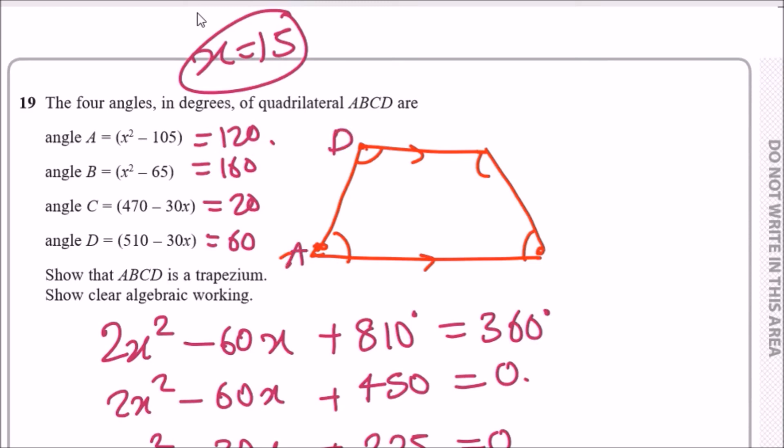This would be B and C because it goes A, B, C, D. So A would be 120 and D is 60, and that checks out, making 180. And C and B, C being 20 and B being 160. That's it guys.